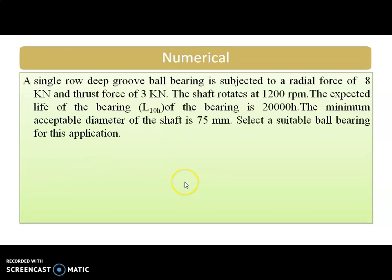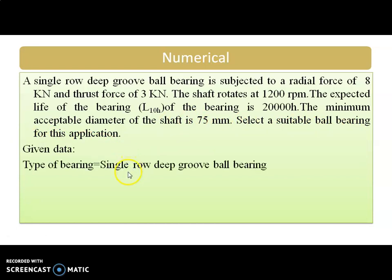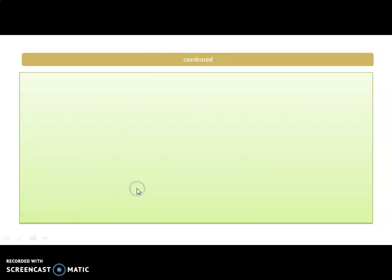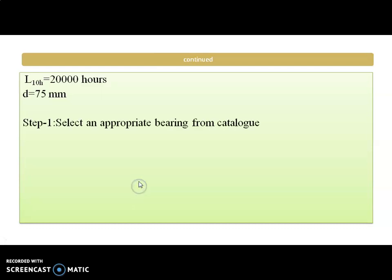Now we will see the numerical on this. A single row deep groove ball bearing is subjected to a radial force of 8 kN and a thrust force of 3 kN. The shaft rotates at 1200 RPM. The expected life of the bearing is 20,000 hours. The minimum acceptable diameter of the shaft is 75 mm. Select a suitable ball bearing for this application. The given data: single row deep groove ball bearing, radial load 8 kN, axial load 3 kN, speed 1200 RPM, life 20,000 hours, shaft diameter 75 mm.